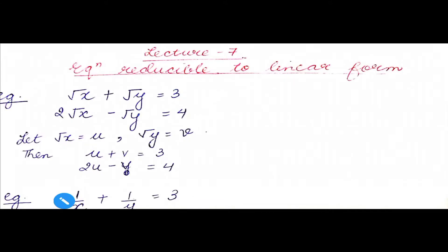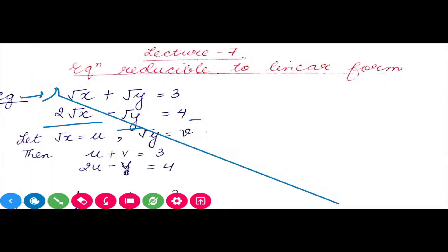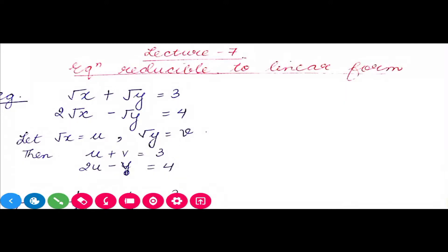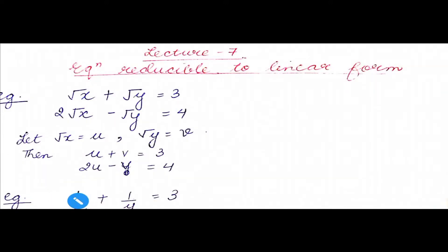But if there is an equation like: root x plus root y equals 3, and 2 root x minus root y equals 4 — this is not a linear equation because x's power is half and y's power is also half. We cannot solve these equations directly; we have to reduce them so that we can solve it. These equations are reducible to linear form, meaning we will convert them into linear form.